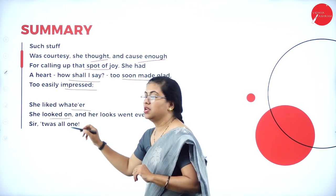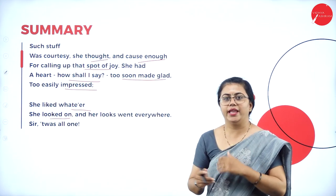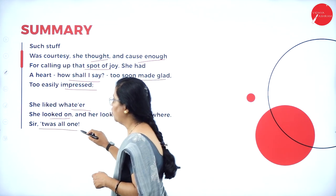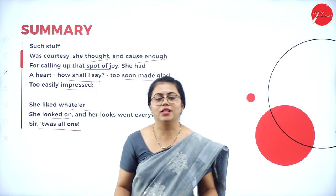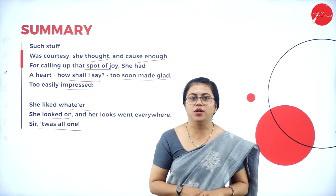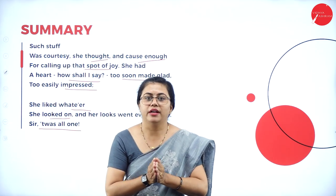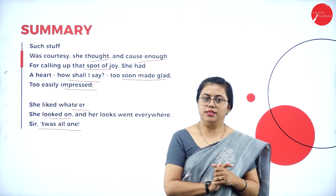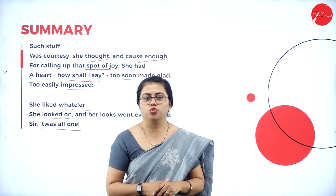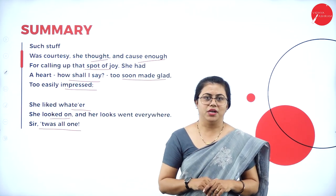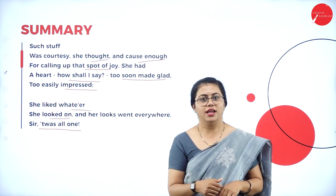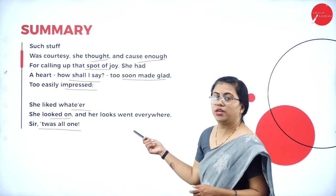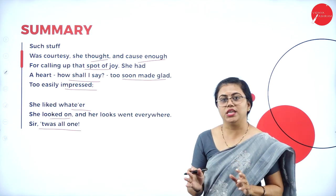'She liked whatever she looked on, and her looks went everywhere.' She treated everybody equally. The Duke points out that she did not have a special place for her husband — she made no distinction between the Duke and other men. Everything was equal for her — which, while it could be seen as a virtue, was like flirting. She was impressed by everybody. This is what the Duke found troubling.